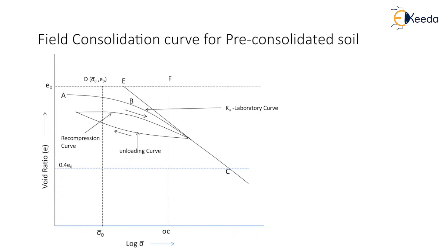A smooth curve DG is drawn parallel to the recompression curve, and it intersects the vertical at sigma c bar at point G. Points G and C are then connected by a straight line, so the curve DGC represents the field curve, denoted as Kf. For pressure between sigma naught bar and sigma c bar, the relevant index is the recompression index Cr, and for pressure greater than sigma c bar, it is the compression index Cc.